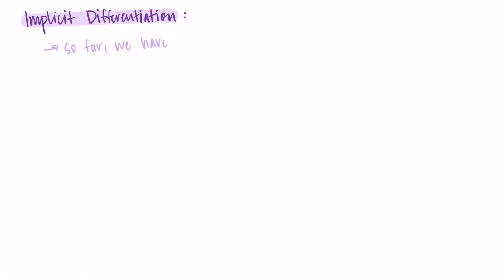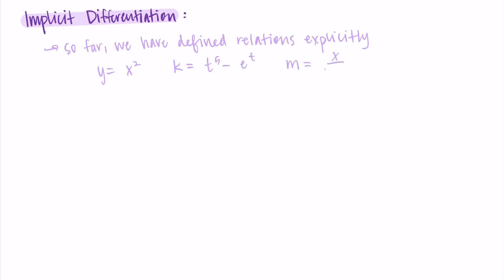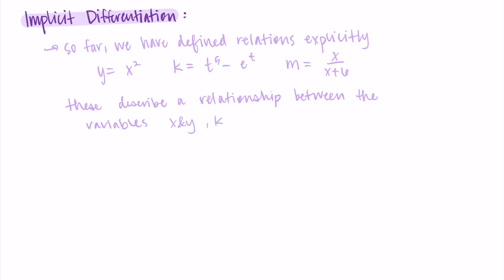So to get us going, I want to talk about what we have done so far. So far, we have been defining relations explicitly. We have something like y equals x squared, k equals t to the fifth minus e to the t, m equals x divided by x plus six. In all of these examples, we have a variable equals — we know what y is, what k is, what m is. The variables are separated: y equals something with x's, k equals something with t's, m equals something with x's. So we know the relationship clearly between x and y, k and t, and m and x.